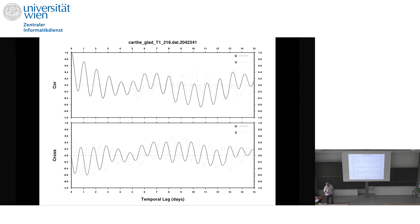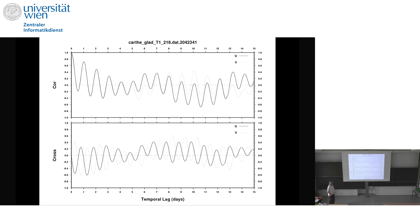Here is the autocorrelation function: the solid line is for u, the dashed line is for v, and here's the cross-correlation between u and v — this is what solitary motion looks like in a correlation function. Looking at the time scale: counting about ten peaks in around 10 days, it's about a day — these are inertial oscillations, clearly visible in the data. This was calculated over the first 30 days of data.